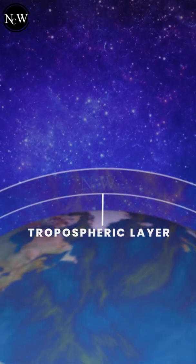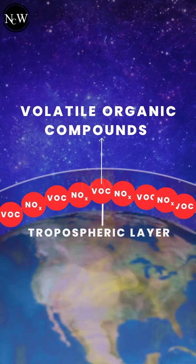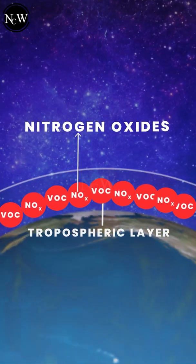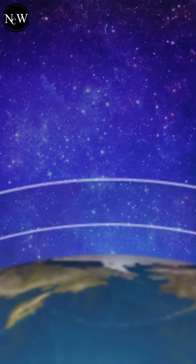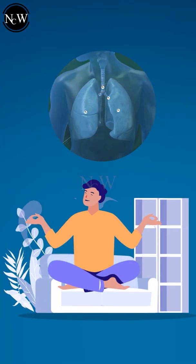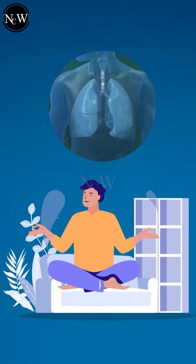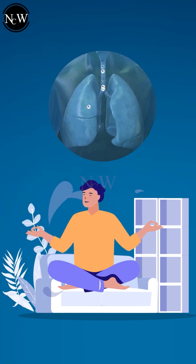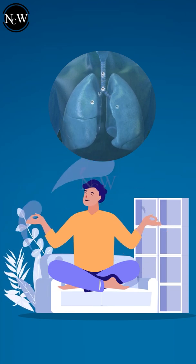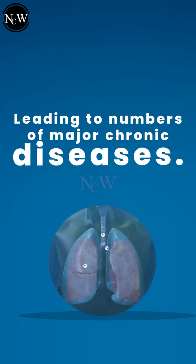The tropospheric ozone is primarily formed by pollutants like volatile organic compounds and nitrogen oxides. As this layer of ozone is close to the surface of earth, humans can easily breathe it. Since ozone is a highly reactive gas, when inhaled it reacts with many biological molecules in the respiratory tract, leading to a number of major chronic diseases.